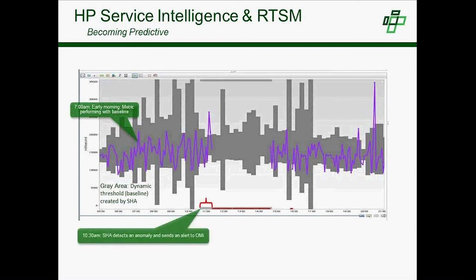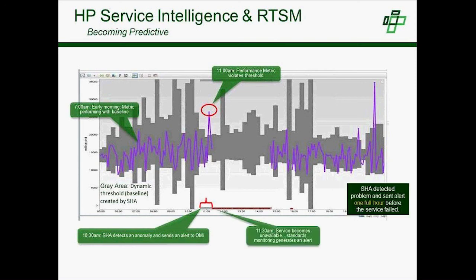In this diagram, at 10:30 AM SHA (Service Health Analyzer) detects an anomaly and sends an alert to the OMI browser — or it can send an SNMP trap to a third party — alerting the NOC team or SMEs monitoring the application. At 11:00 AM, the performance metric violates the dynamic threshold created by Service Health Analyzer. By 11:30 AM, the service becomes unavailable at 0% availability. The entire idea is to detect anomalies before the business service is interrupted, based on weeks of data collected for those metrics.